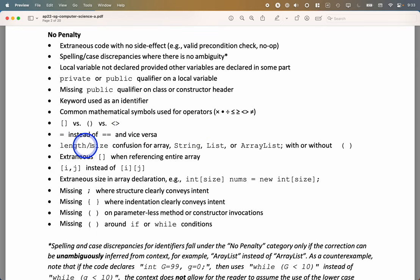If you confuse length and size for array, string, list, or array list, and you have parentheses or don't have parentheses, no penalty there. I think the College Board realizes the inconsistencies within Java. If you refer to the entire array, but you throw on an extra pair of square brackets, that's okay. If we're doing 2D arrays and you do i comma j notation instead of two pairs of square brackets, that won't be penalized.